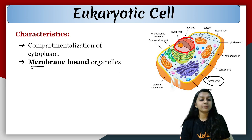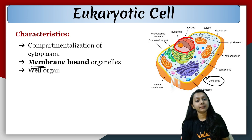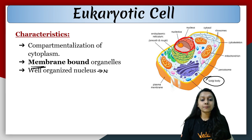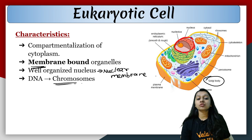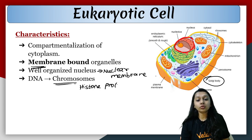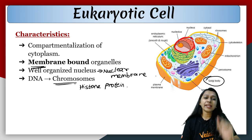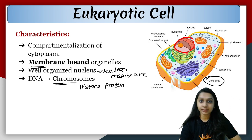All membrane-bound cell organelles are present. The nucleus will be better organized with a well-developed nuclear membrane. DNA will be packed in the form of chromosomes because they have histone proteins — true chromosomes will be seen. But in prokaryotes there are no histone proteins, so there is only a single compact false chromosome in the prokaryotic cell.